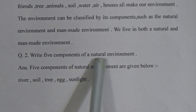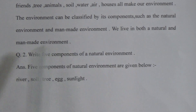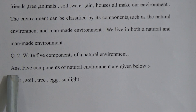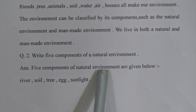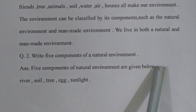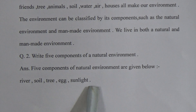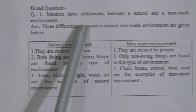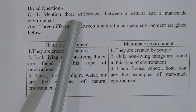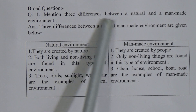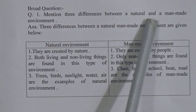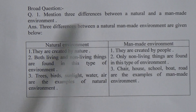Second short question: write five components of natural environment. Answer: five components of natural environment are river, soil, tree, egg, and sunlight. Now we come to the broad question. The first broad question is: mention three differences between a natural and a man-made environment.